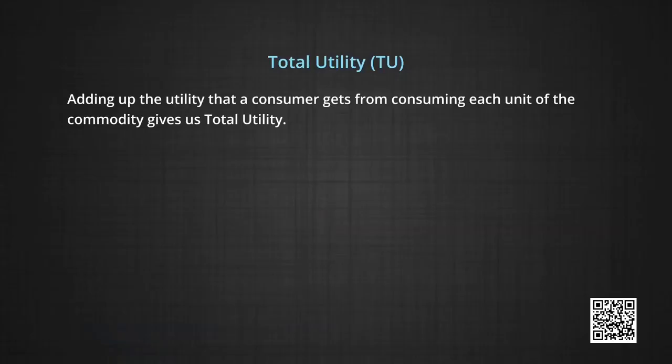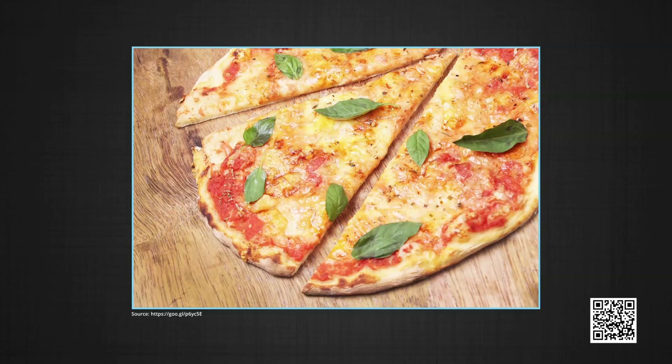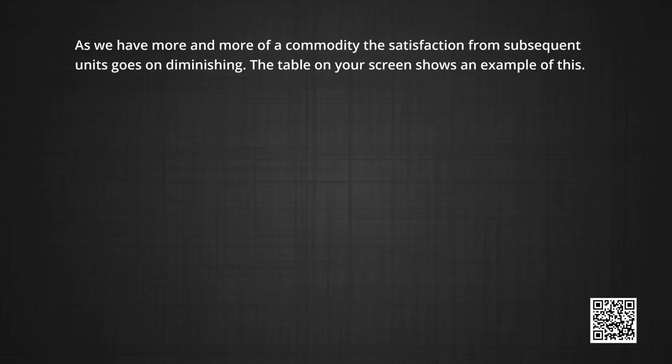We believe that the consumer's utility generally increases from consuming more and more of a commodity. Adding up the utility that a consumer gets from consuming each unit of the commodity gives us total utility. Imagine that you want to have pizza. The intensity of wanting pizza is so high that the first bite makes you say, wow. Typically, as you go on having more and more pizza, you begin to feel full, so each extra bite gives you less satisfaction than the one before. Eventually, you may even begin to feel a little sick of pizza. This brings us to the conclusion that as we have more and more of a commodity, the satisfaction from each subsequent unit goes on diminishing.